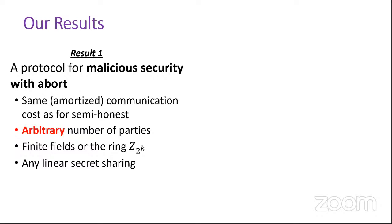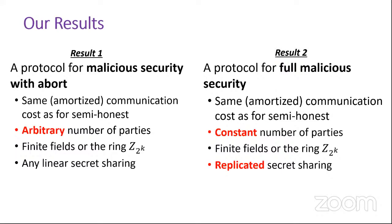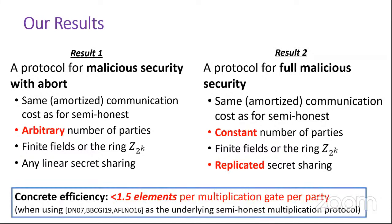We have two results. The first is a protocol for malicious security with abort with the same amortized communication cost as semi-honest, for arbitrary number of parties, working over fields and rings with any linear secret sharing. The second is a protocol for full malicious security with the same amortized communication cost as semi-honest, but only for constant number of parties as it is based on replicated secret sharing, whose share size grows exponentially with the number of parties.